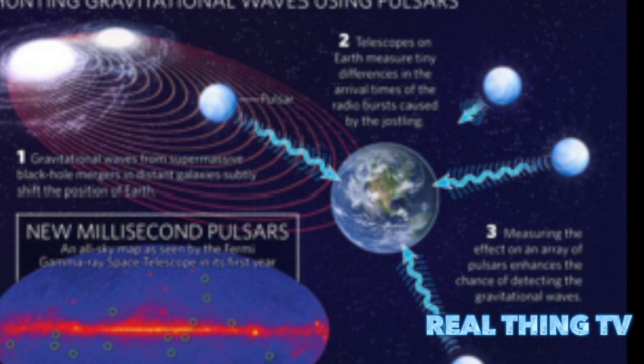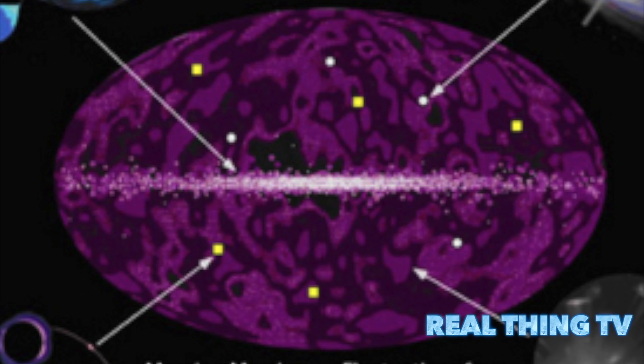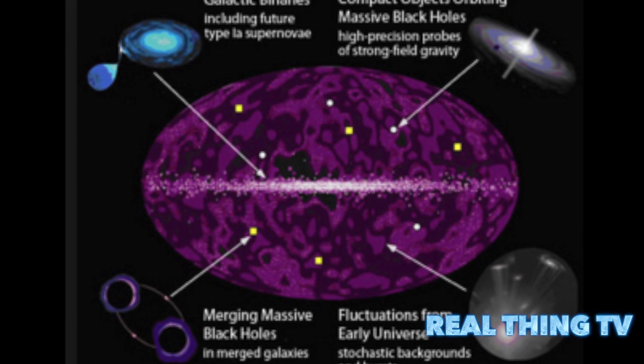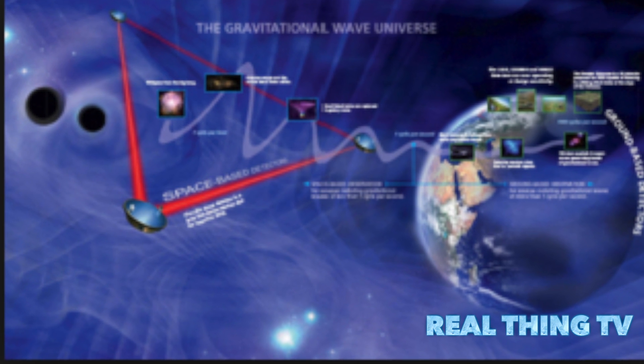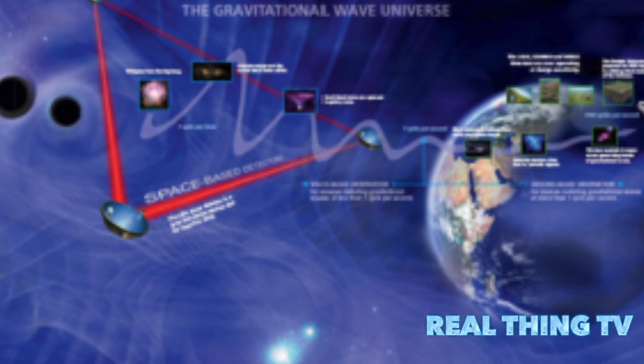But if gravitational waves have been proved true, then astronomers could use them to gain a better understanding. Scientists would be able to trace gravitational waves back to the source of what caused them in the same way they can with light waves.